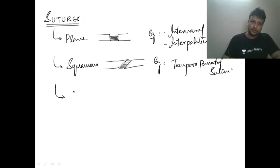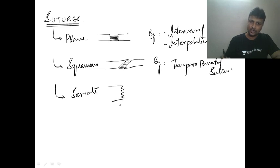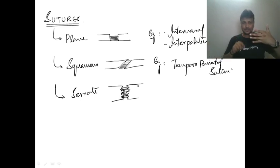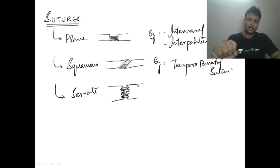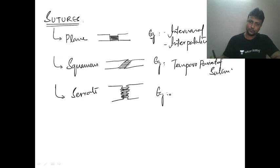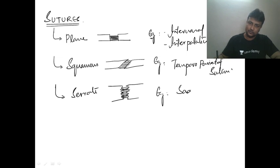The third type is the serrate suture. In a serrate suture, the end of one bone is serrated and the end of the other bone is also serrated, and these two are joined together by fibrous tissue. The example of the serrate suture is the sagittal suture in the midline.